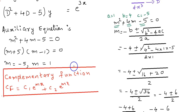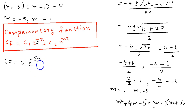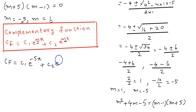Let us now substitute the values of the roots m equal to minus 5 and m equal to 1 into the formula. We get the complementary function as c1 e raised to minus 5x plus c2 e raised to x.